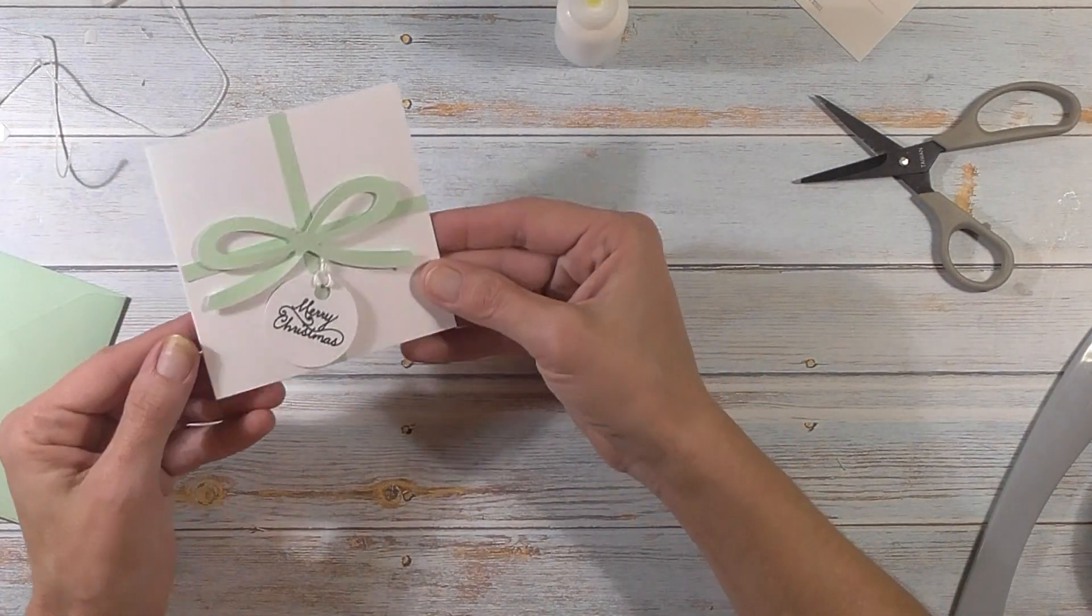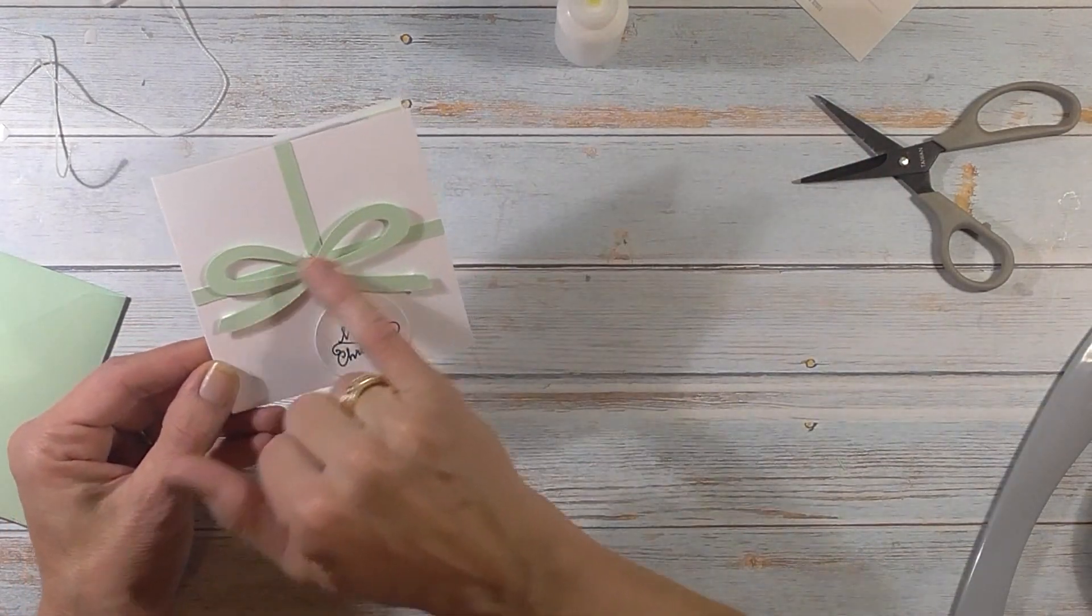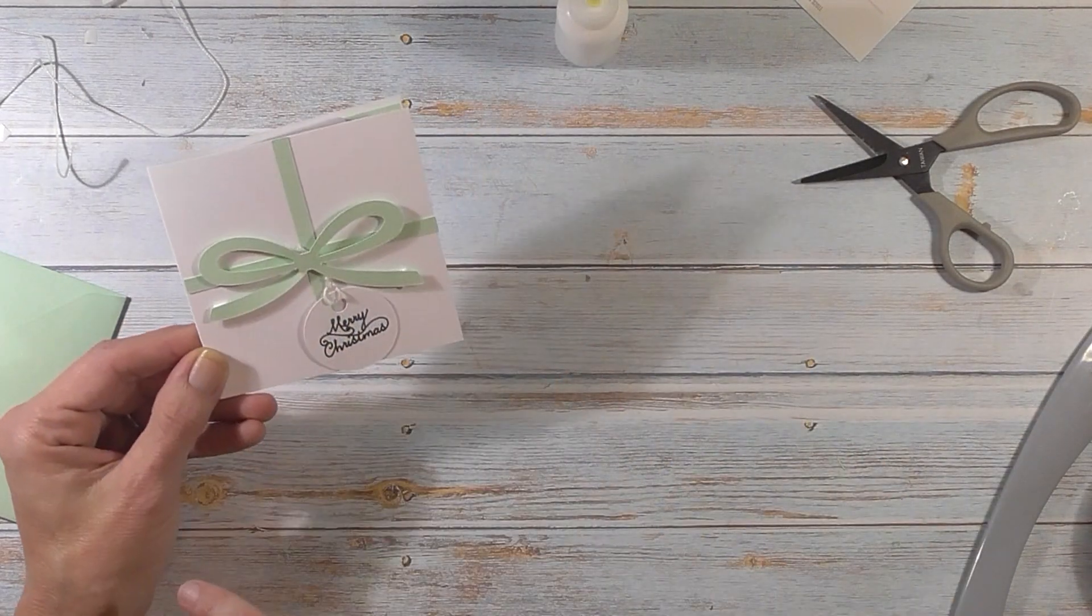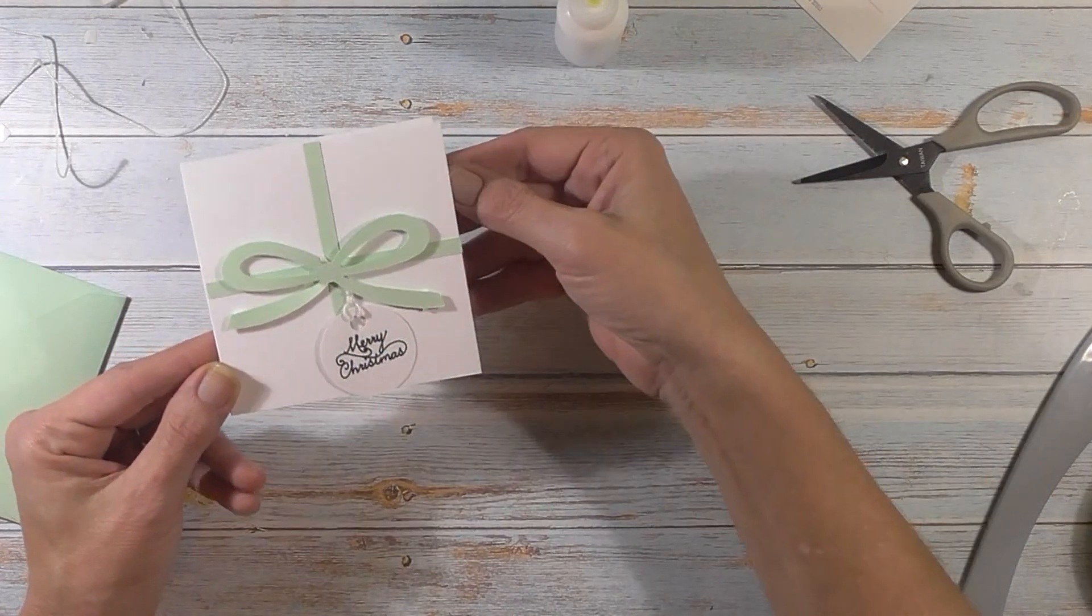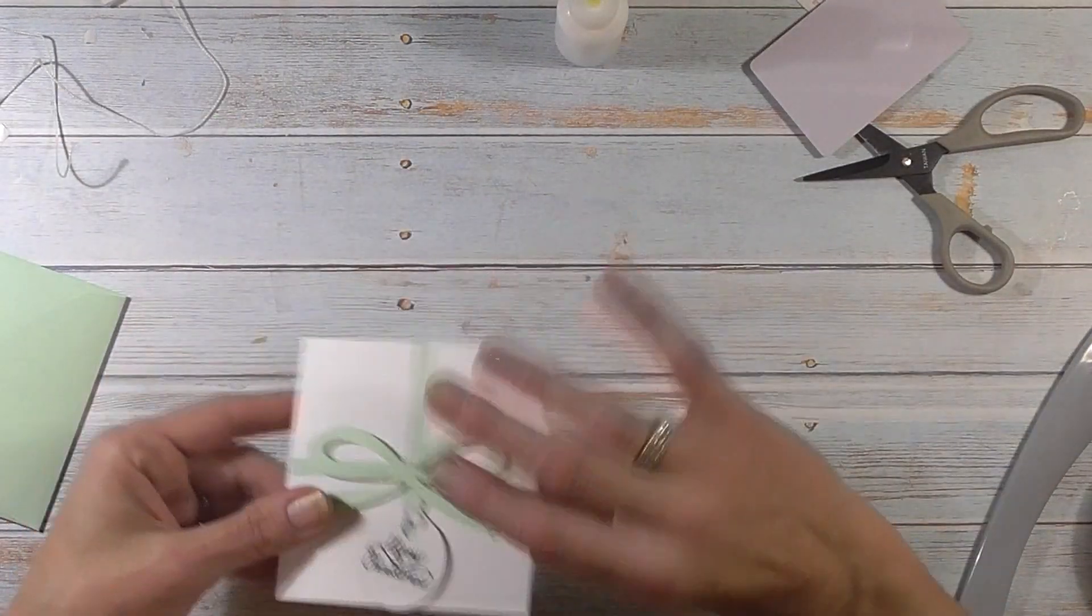So how cute would that be to give to somebody? Right, just a really simple plain little card. You can of course jazz this up. You can put, you can use an embossing fold in the back to emboss the 4x4 area of the front of the card. You can use a glitter card stock for the front. I just kept it pretty simple. But I do love the idea that you are able to hold a gift card in there.